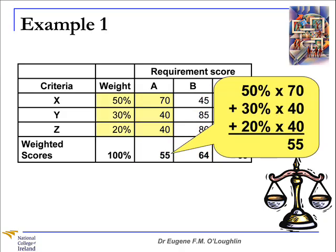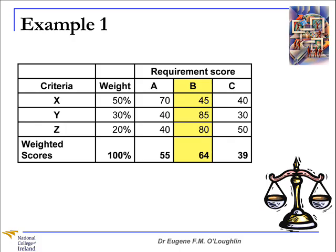I don't simply add these up — I need a formula to work these out. We calculate the weighted scores by multiplying the weight for each criteria by its numerical value and adding the resulting values. The total score of 55 for requirement A is made up of 50% multiplied by 70, plus 30% multiplied by 40, plus 20% multiplied by 40, giving a value of 55. Doing the same for requirements B and C, requirement B comes out with the highest weighted score of 64, requirement A second at 55, and requirement C lowest at 39. So requirement B is the highest priority and requirement C is the lowest.